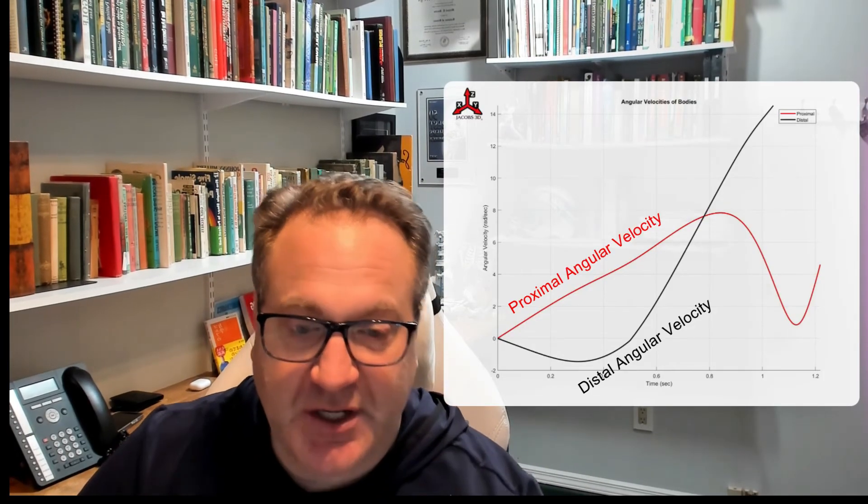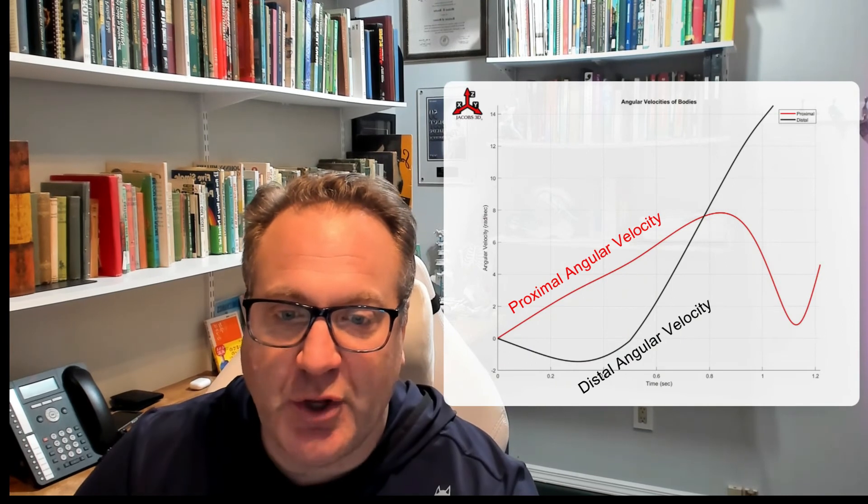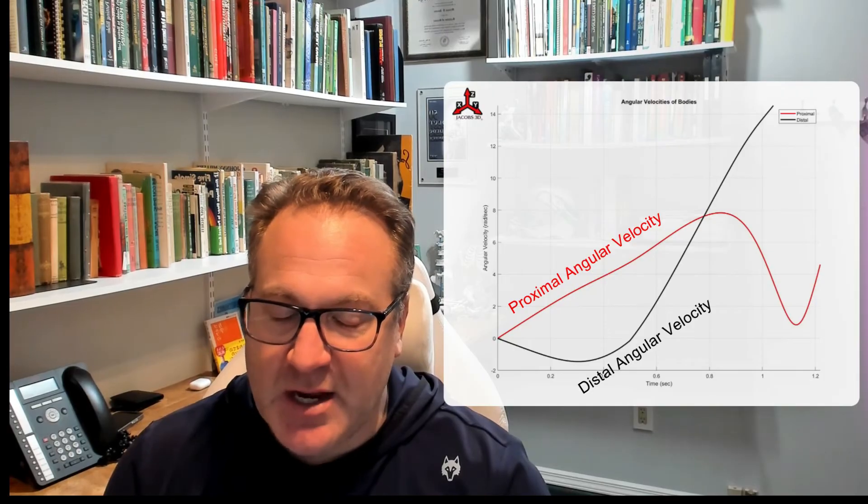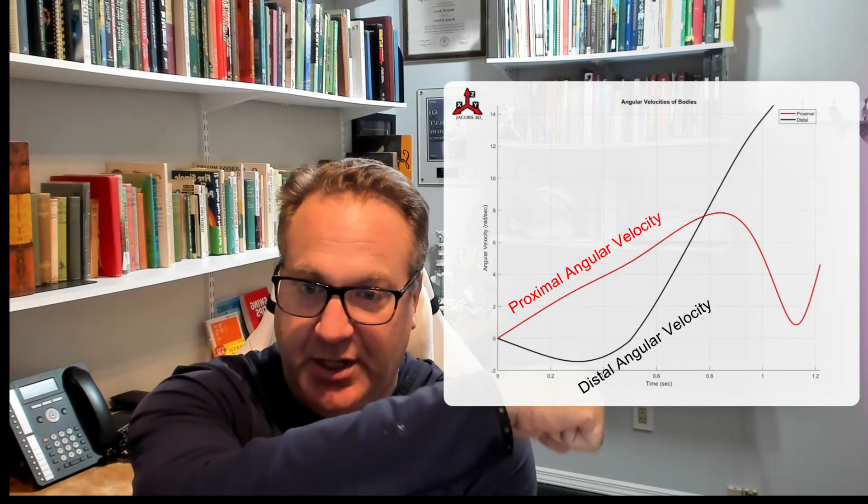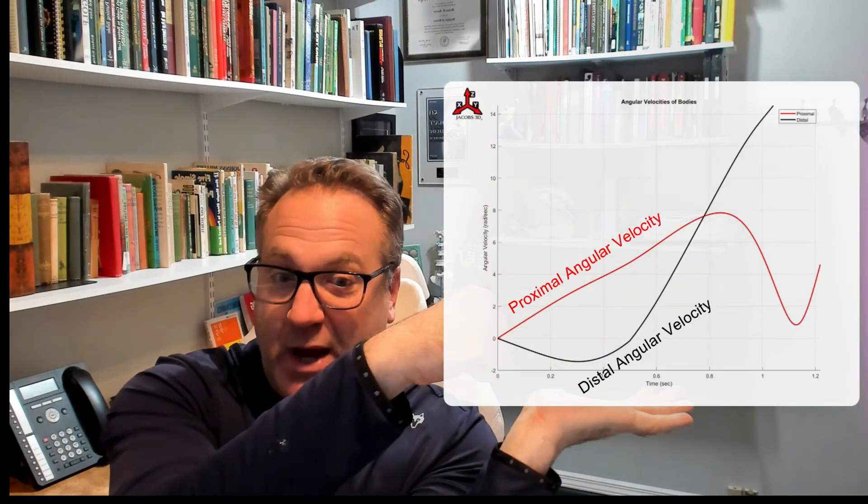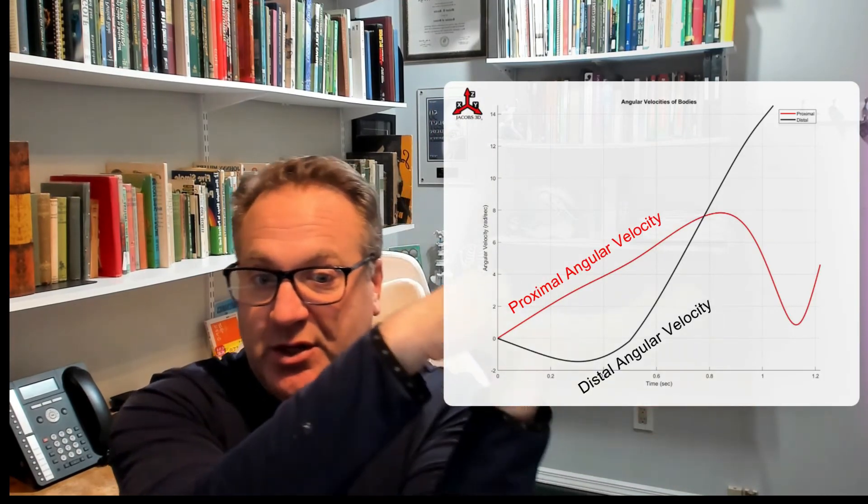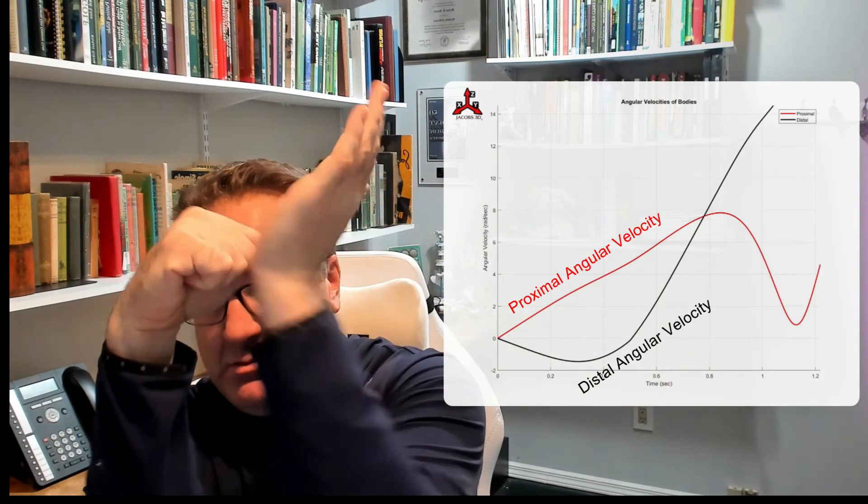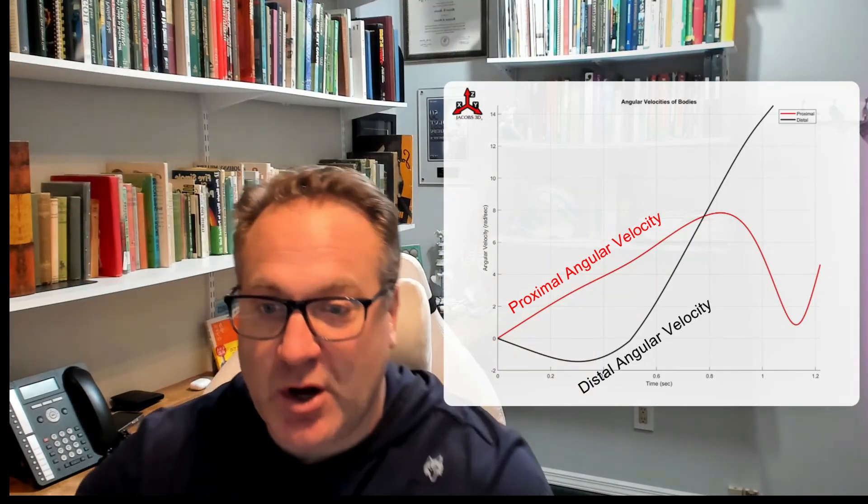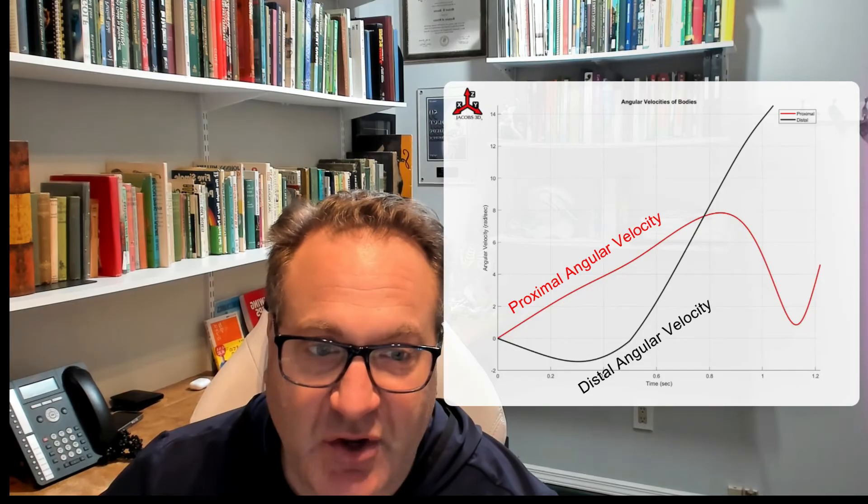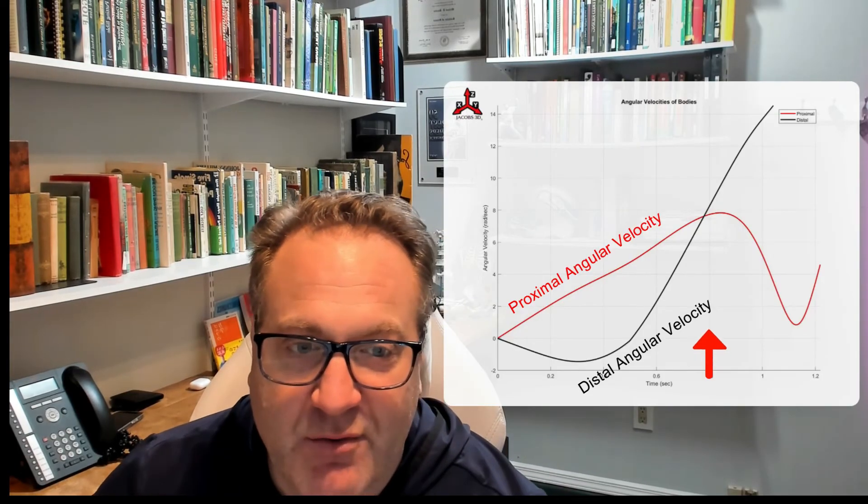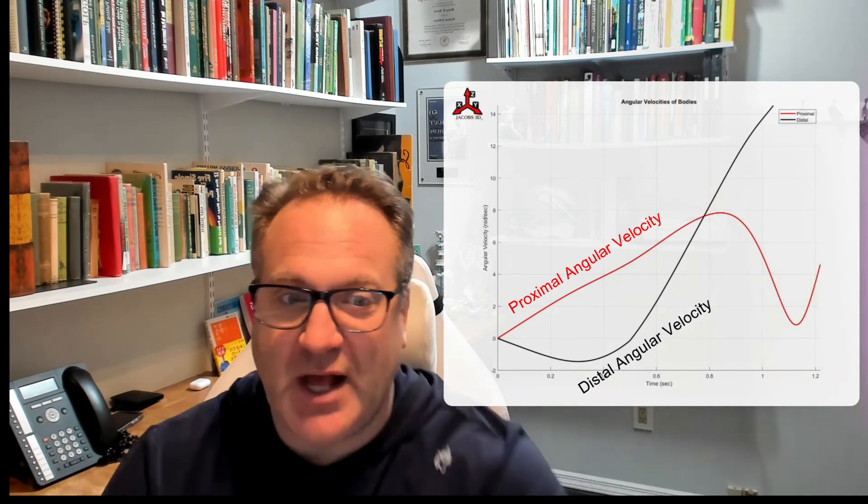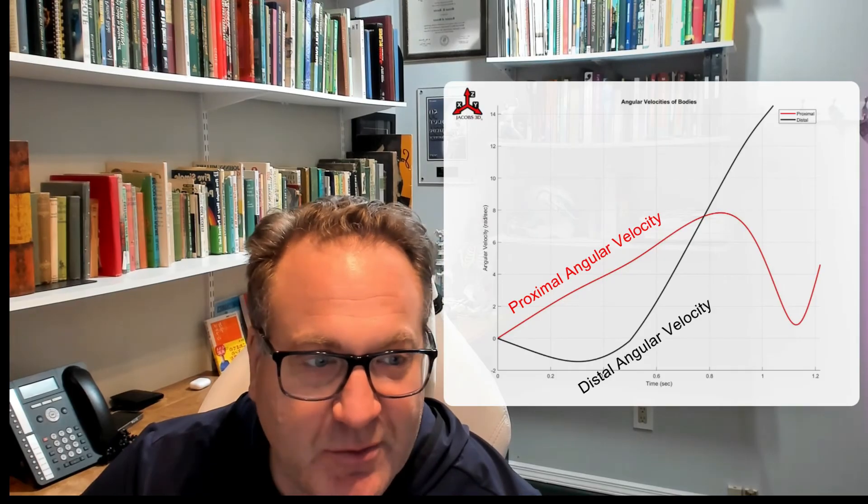When you look at the angular velocity of the distal link, the golf club, you'll notice that it was negative at first. So when we go back and we watch the simulation in a second, you're going to notice that because the proximal link went first, the distal one went the other way, had a little negative velocity, until it started to catch up with the proximal link. And then we turned a torque on there. And you can see that things started to change right around this area as the distal link continues its angular velocity increase, but there was a definite energy transfer between the two.